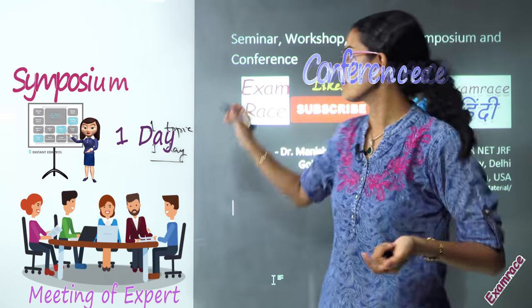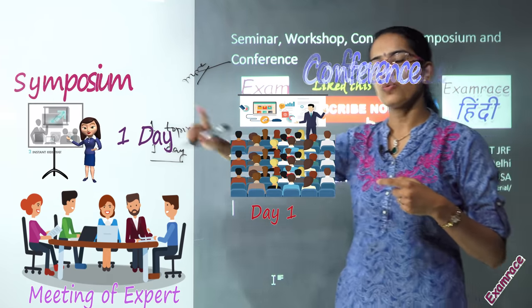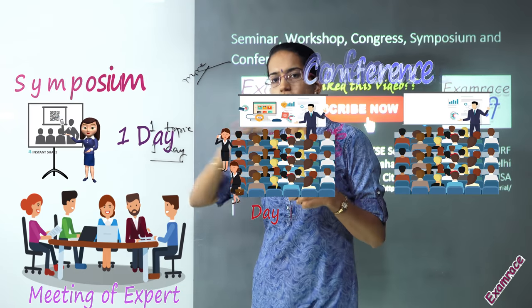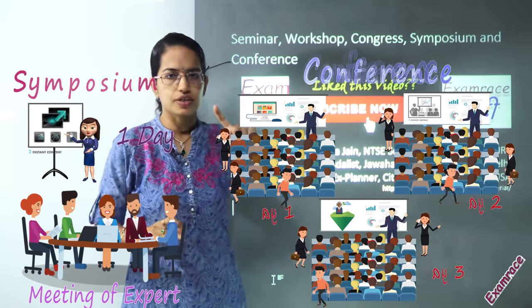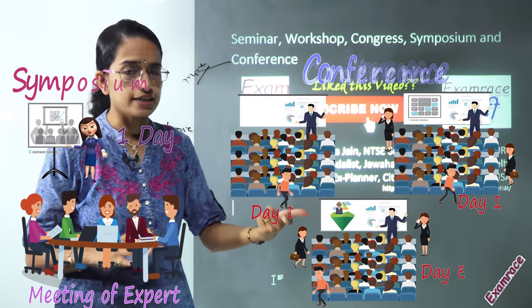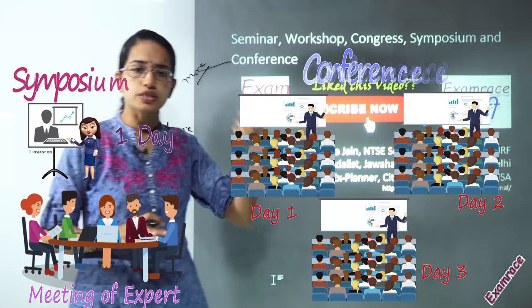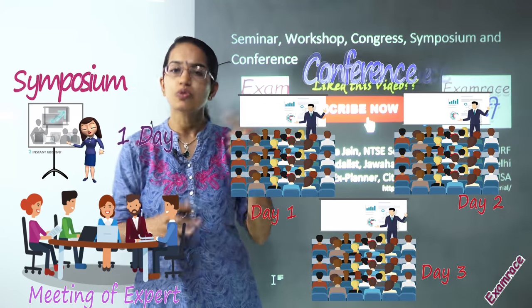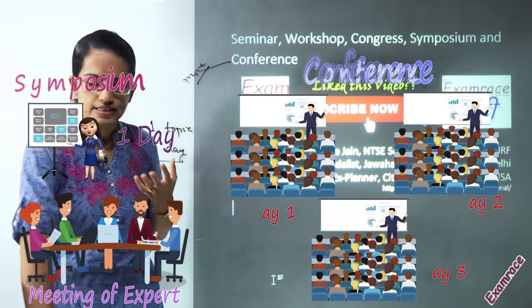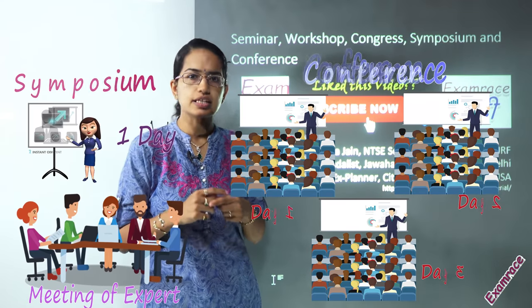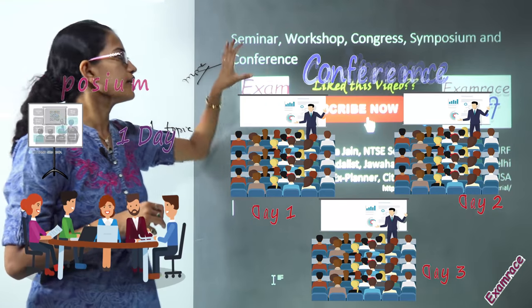A conference usually has more members and can span one day, two days, or three days — covering a period of time. Conference is not restricted to one field; it can be in different fields such as academic, research, journalism, sports, trade, and tourism. So a conference can be related to numerous, diversified fields. There is also a pre-arranged formal agenda that is decided for the conference.